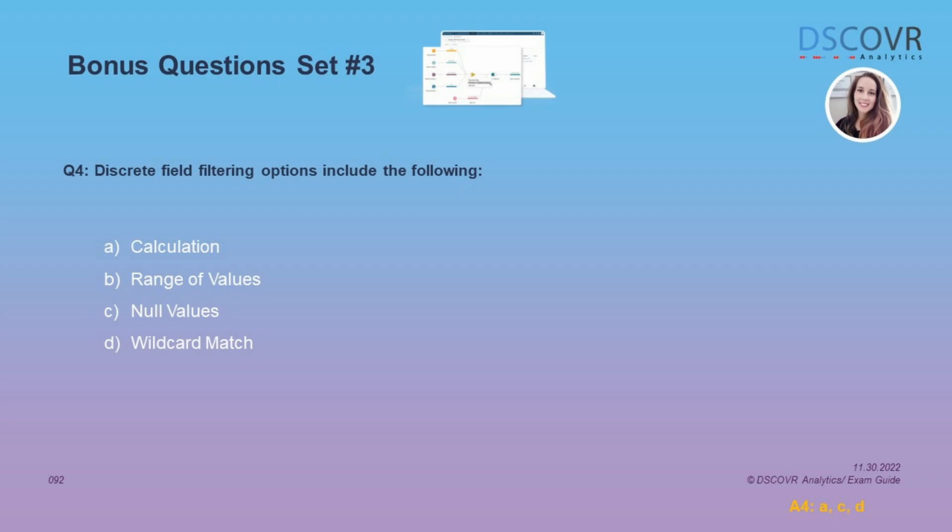For question number four, we need to think about different filtering options that are available for discrete fields. If you take a closer look at this list, you should easily be able to identify which option does not belong here. Range of values, or option B, is one of the filter options for continuous fields — not discrete fields.